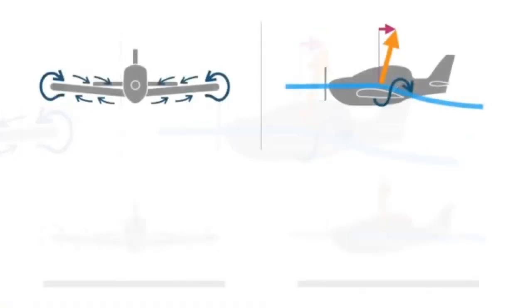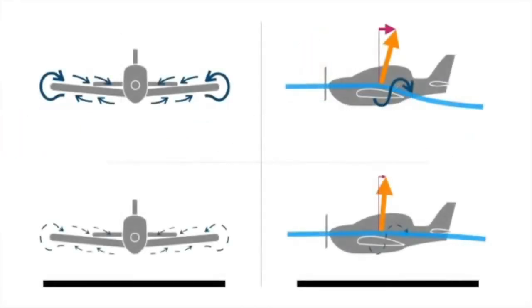When an aeroplane is flying closer to the ground, the downwash is restricted, so the formation of the wingtip vortices is also restricted. In ground effect, the lift vector is not tilted back as much, so total drag is less. This means that less thrust is required to maintain the same airspeed.